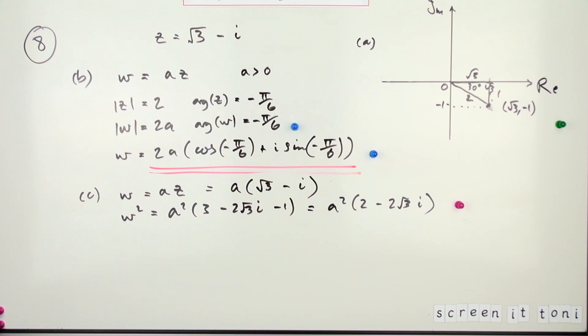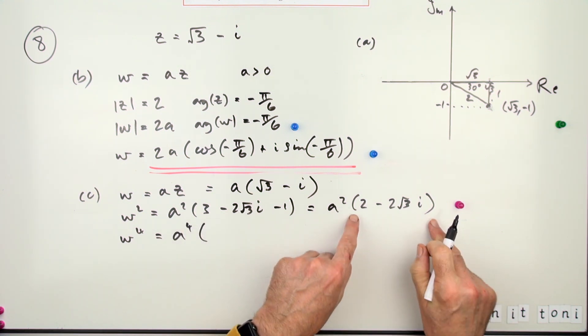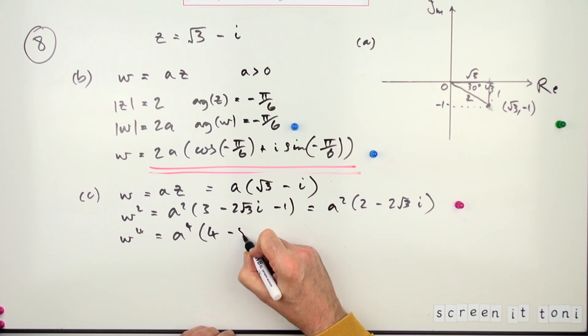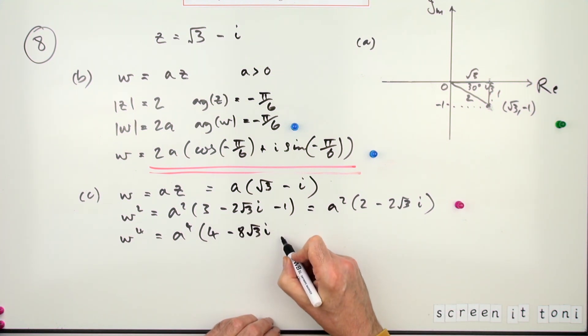That'll get a mark. Then you can step up from power two to power four by squaring this. So that will be a to the power 4, and then square this part. So it'll be: square the first—4; twice the product will be 8, so −8√3—let's put the i at the end; square the last would normally be plus, but that i² will make it minus, and that'll be 4 threes are 12. So that's a^4·(−8 − 8√3·i).